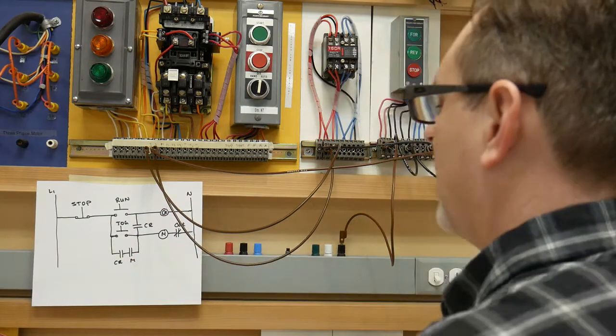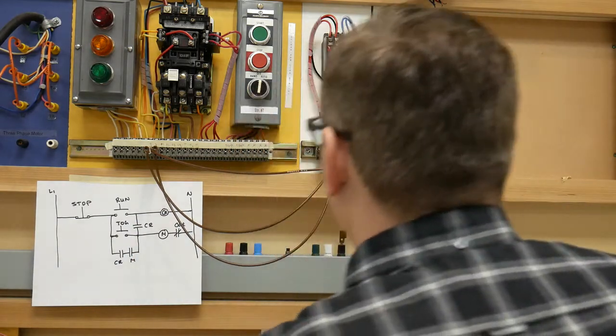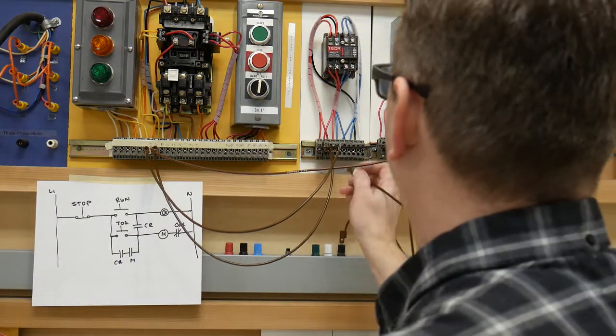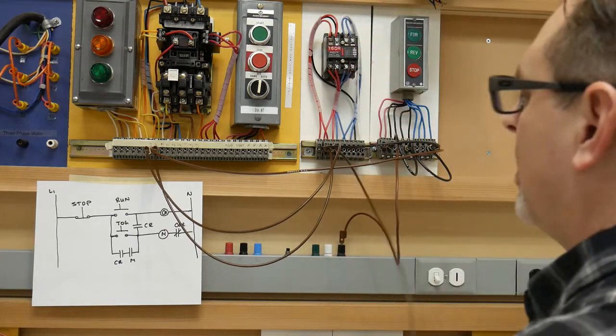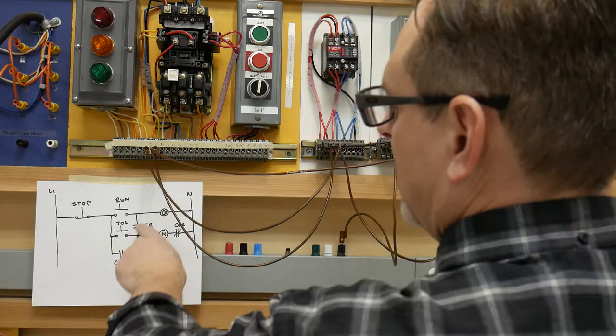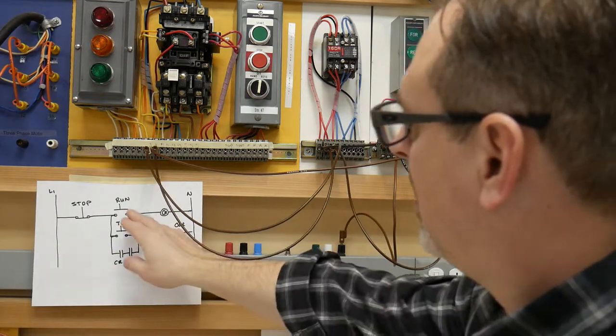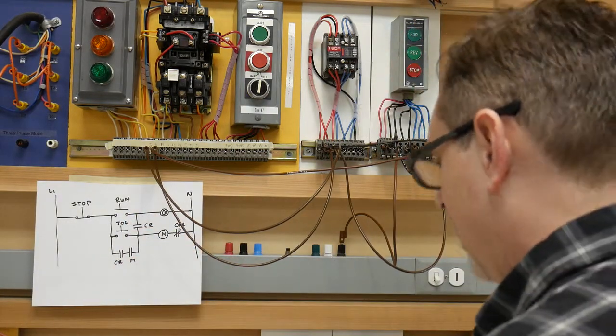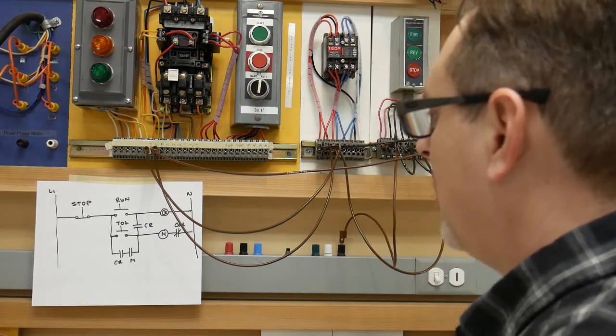Now we need to head up. We're going to go out of the other side of the normally open control relay contact that I just wired. And I'm going to go to the other side of the run push button, which is here. That's this one here. So that's that jumper there. I know this gets a little bit confusing on the screen.